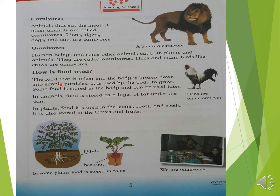The food taken into the body is broken down into simple particles inside the body. These particles are used by the body to grow. Some food is stored in the body and can be used later. In animals, food is stored as a layer of fat under the skin. In plants, food is stored in the stems, roots and seeds.